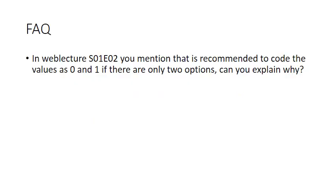The question I'll be answering in this segment is: in Web Lecture Session 1, Segment 2, I mentioned that it's recommended to code values as 0 and 1, rather than, for example, 2 and 1, if there are only two options. And I often get students asking me, why is this?